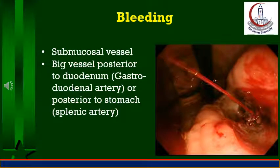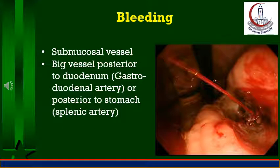Mortality in bleeding peptic ulcer is high, amounting to 20 to 30 percent. This increases in the elderly, in the presence of comorbidities, and if the patient needs more than 5 units of blood transfusion during hospital stay. Bleeding can occur from small vessels in the wall of the ulcer crater or due to erosion into a major vessel such as the gastroduodenal artery in posterior duodenal ulcer. Bleeding from erosions of the gastroduodenal artery is severe, torrential, and almost always needs early surgical intervention. Erosion of the splenic artery by a posterior gastric ulcer is almost always fatal. The clinical presentation is hematemesis and/or melena with hypovolemic shock in the form of pallor, tachycardia, sweating.